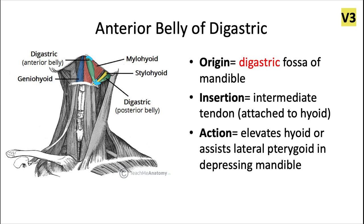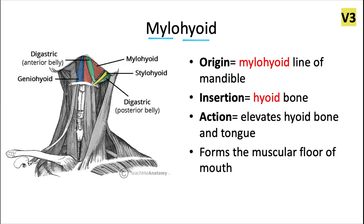Some people may refer to the digastric as a muscle of mastication. This one's also innervated by V3. The mylohyoid was also innervated by cranial nerve V3, the trigeminal nerve, the third branch of that nerve.